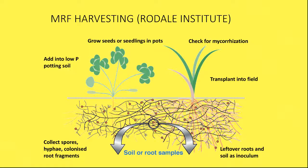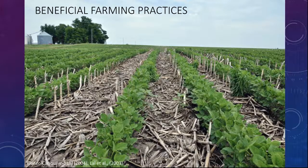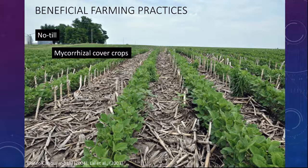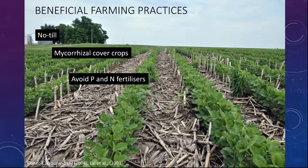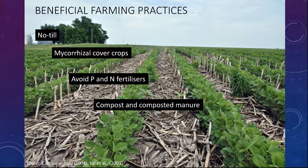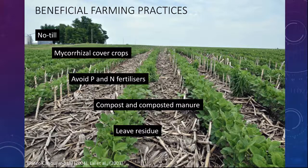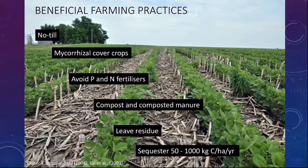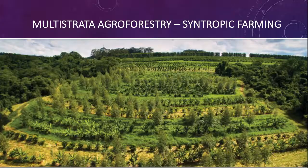Once mycorrhizal fungi are established and cared for, regeneration can happen. One of the ways is to practice no-tilling — no disturbance of the soil so you leave the fungi in there. Use mycorrhizal cover crops that are symbiotic with these fungi. Never leave the soil bare — keep covering it with plants that will keep feeding the fungi. Don't use fertilizers — they will kill your fungi. Compost manure as an amendment to the soil. Leave the residue and plant straight into it. This will sequester up to 1,000 kilograms of carbon per hectare per year.